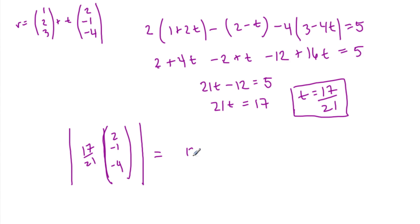So this will be seventeen over twenty-one, times the square root of four, plus one, plus sixteen. Which is going to be seventeen over twenty-one, root, that's five, plus sixteen, is twenty-one. So there is our shortest distance.